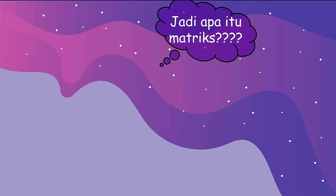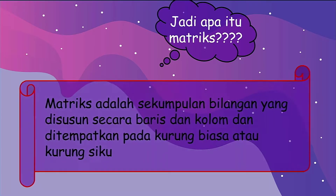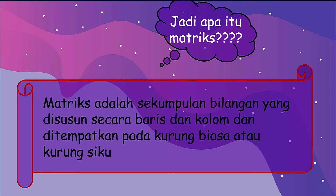Jadi, pengertian matriks itu apa? Matriks itu adalah sekumpulan bilangan yang disusun secara baris dan kolom dan ditempatkan pada kurung biasa atau kurung siku. Jadi, matriks itu terdiri dari baris dan kolom.